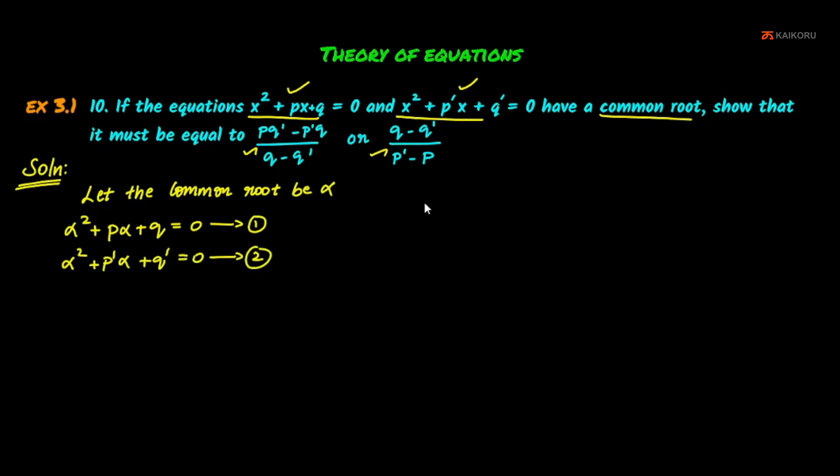Now we can do first equation minus second equation. When we subtract, α² minus α² will get cancelled. So we have pα - p'α + q - q' = 0.